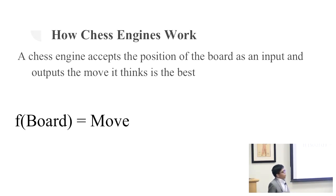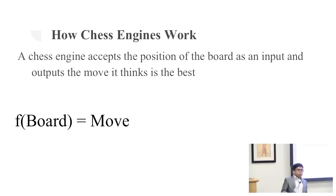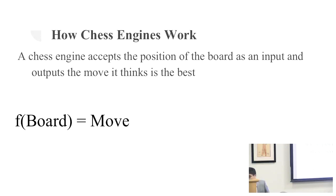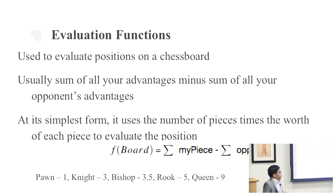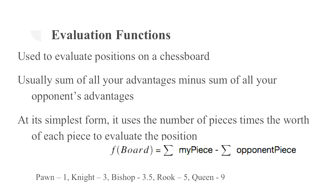Let's back up a bit. At its core, a chess engine is a function that converts a position into a move. The way it does that is it looks at all the possible moves a player can play, selects what it thinks is the best move, and chooses that. The way it evaluates moves is through something called an evaluation function — which looks at the board and determines how good that position is for a certain player.